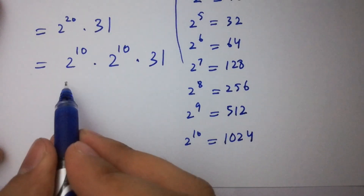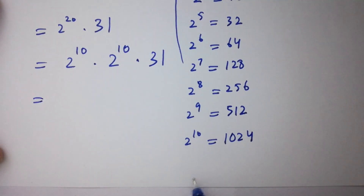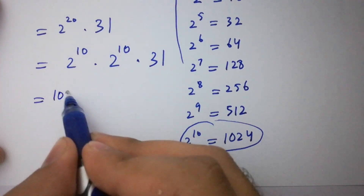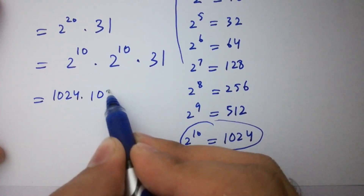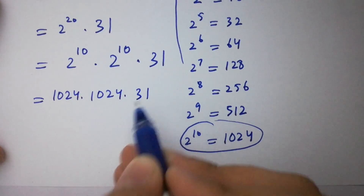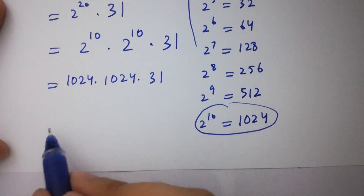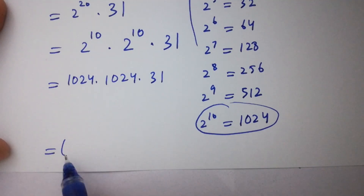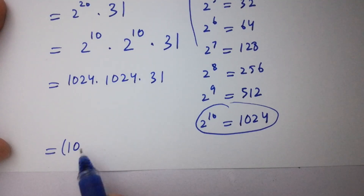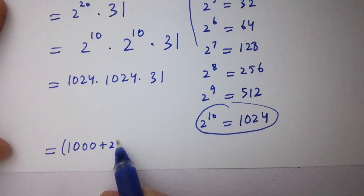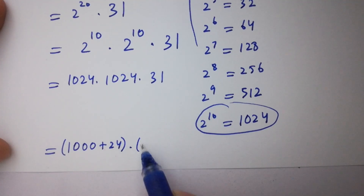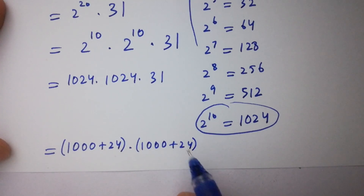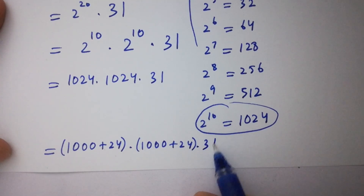So 2 to the power 20 equals 1024 times 1024, and multiplied by 31 gives us 1024 times 1024 times 31. We write 1024 as 1000 plus 24, so this is 1000 plus 24, times 1000 plus 24, times 31.